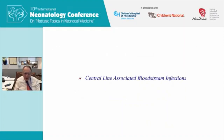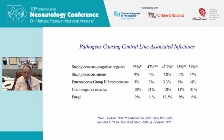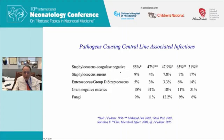Now I'll talk specifically about CLABSIs — central line-associated bloodstream infections. These are five different articles from across the world — the US, Europe, and the Middle East — looking at the pathogens responsible. They are pretty similar: for most studies, coagulase-negative Staphylococcus is by far the most common cause of central line infections. This last study from Yale is different, as it is less commonly a cause there, followed by gram-negatives, Staphylococcus aureus, and finally fungi and enteric organisms.